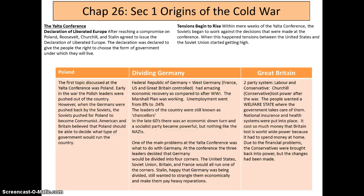The origins of the Cold War: the Yalta Conference and the Declaration of Liberated Europe. After reaching a compromise on Poland, Roosevelt, Churchill, and Stalin agreed to issue a Declaration of Liberated Europe, giving people the right to choose their form of government. However, tensions began to rise — within mere weeks of the Yalta Conference, the Soviets began working against the decisions made at the conference, causing tensions between the US and Soviet Union to escalate.